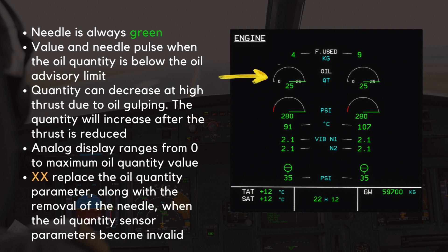The next indication is the oil quantity level. The oil quantity needle is always green. However, the value and needle pulse when the oil quantity is below the oil advisory limit. The oil quantity in the tank can decrease at high thrust settings due to the effect of oil gulping. In this case, the indicated oil quantity will increase after the thrust is reduced. Different engine manufacturers and airline operators have their own oil quantity limit specifications, so consult your operation manuals for the appropriate figures. The analog display ranges from zero to maximum oil quantity value. Amber crosses replace the oil quantity parameter along with the removal of the needle when the oil quantity sensor parameters become invalid. As long as the oil temperature and pressure of the affected engine remains within limits, the normal operation of the engine should not be affected.